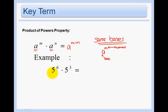So in this example, when I have 5 to the 6 times 5 to the 3rd, my base is 5 in both, so my answer is 5 to the 6 plus 3 or 5 to the 9th power. And you can just leave your answer like that.